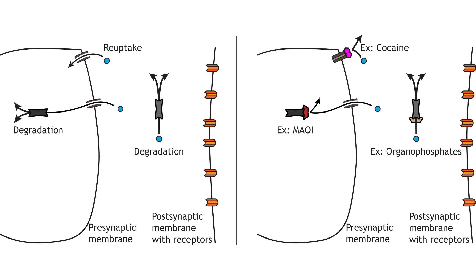Monoamine oxidase inhibitors, MAOIs, prevent monoamine oxidase from degrading the biogenic amine neurotransmitters. MAOIs have been used as antidepressants since they increase the amount of transmitter available. Additionally, drugs can prevent the reuptake of neurotransmitters into the presynaptic terminal. Cocaine blocks the dopamine transporter, which results in increased action of dopamine in the synapse.